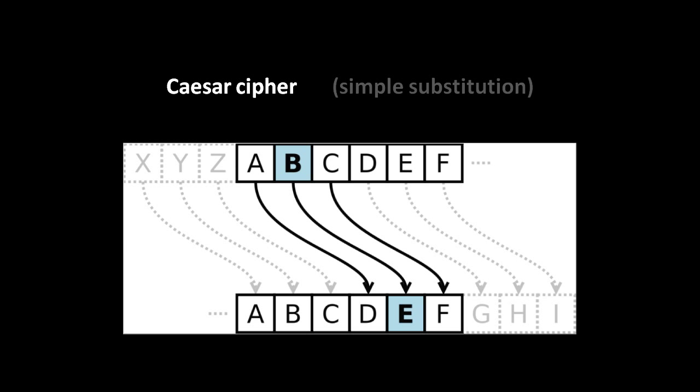The way the cipher works is you simply substitute each letter of a message with the letter which is some set places down in the alphabet. Caesar reportedly used a rotation of three. So, in the English alphabet, a B would be substituted with E, C with F, D with G, E with H, and so forth.